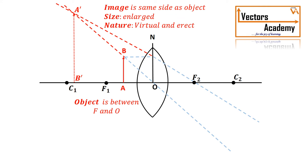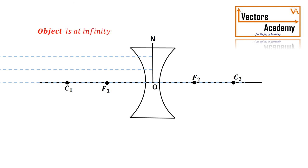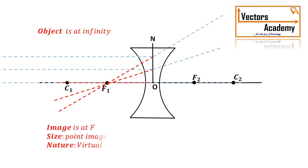Now let us understand the concave lens. For a concave lens, when the rays are parallel to the principal axis, they diverge. If we extend the ray to the opposite side, they pass through the focus F1. So when the object is placed at infinity, the rays parallel to the principal axis diverge, and extending them to the opposite side shows they pass through the focal length. The image formed is on the same side as the object — hence it is virtual — and it is a point image.